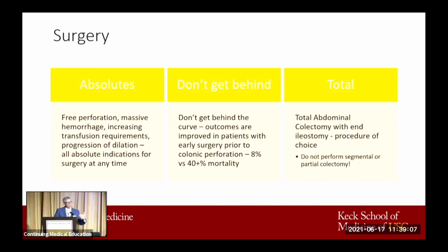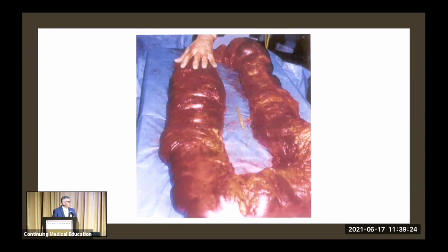If you get in before the perforation, you still have about an 8% mortality. But once the perforation happens, the mortality in these patients rises to over 40%. The operation you should be performing is a total abdominal colectomy with ileostomy — it's your procedure of choice. There is no role for segmental or partial colectomies. Here is a patient from about five years ago that I did at the county who had C. diff — as you can see, that's a pretty big colon, and it's a total abdominal colectomy on the table.